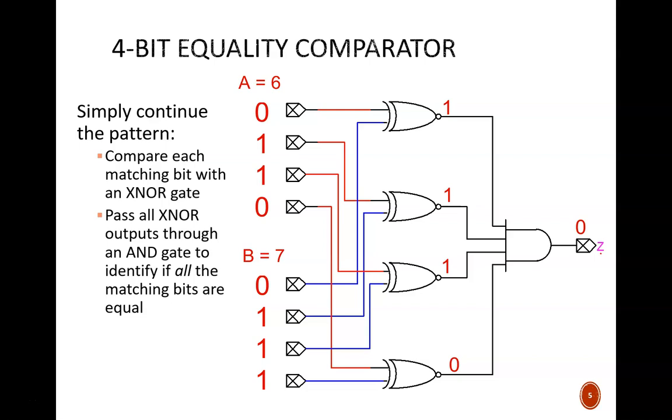But if we change this single bit to make input A equal 7, then every one of the XNOR gates produces a high value, and this final output is high. Yes, 7 does equal 7.